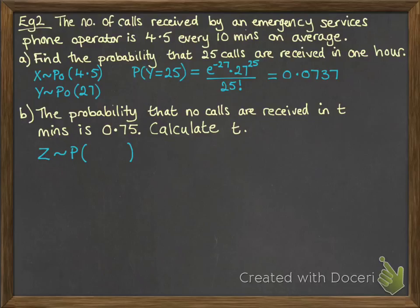But we can put the parameter in terms of t. So if you knew how big that interval was, how many minutes it was, you would do 4.5 divide it by 10 to calculate how many calls he would get in one minute, and then you'd times it up by t for however many minutes you're making this interval.